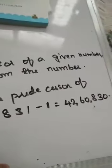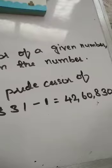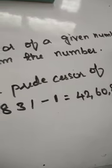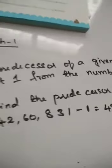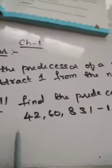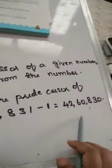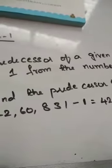So this is the predecessor — by subtracting 1 from the number, we will get 42,60,830.